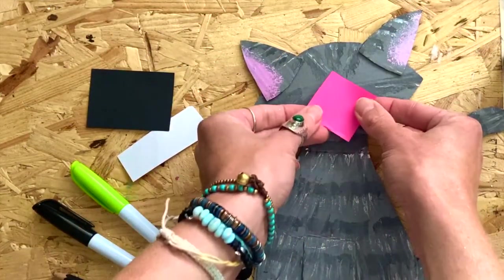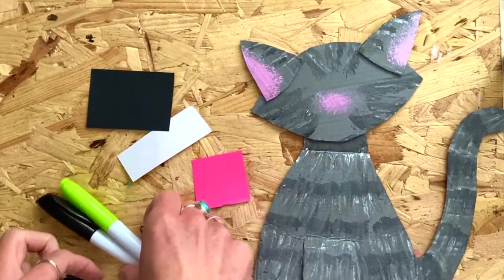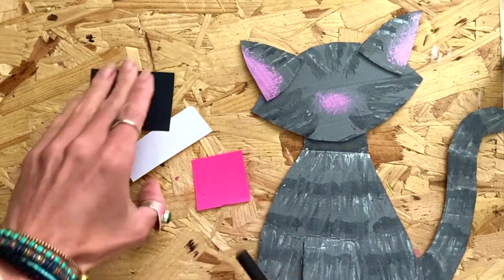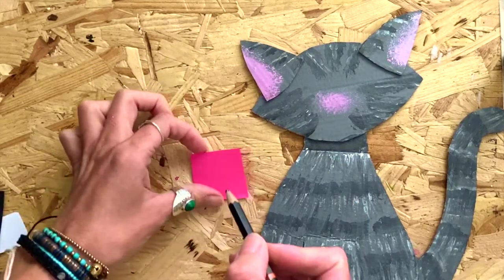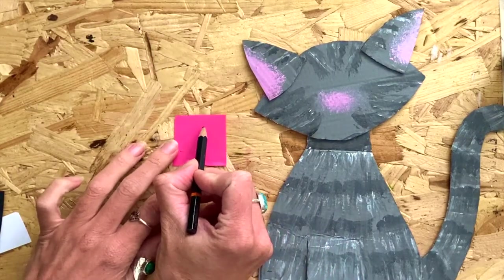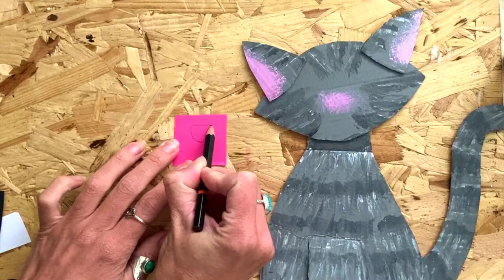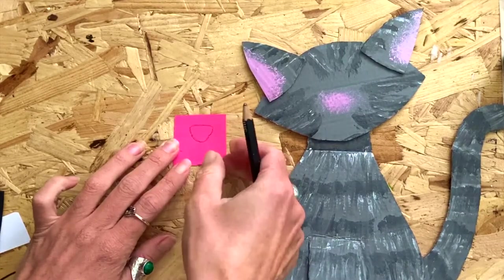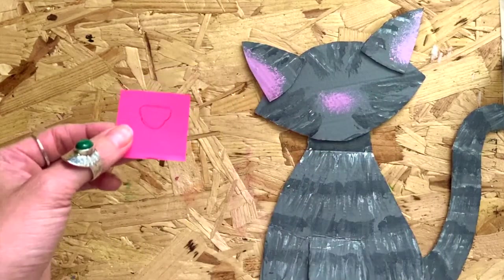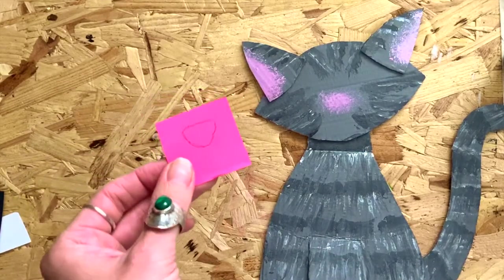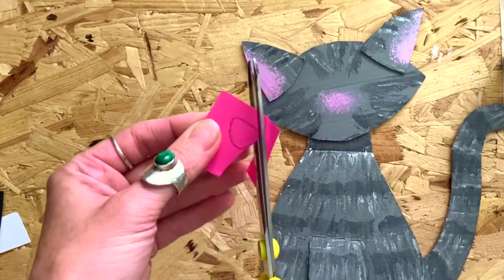Taking some pink paper or just some plain paper that you've colored in with a pink crayon or coloring pencil, we're going to create a nose shape. The best way to do this is to draw a little triangle and make sure that the triangle's corners are rounded instead of sharp. With some scissors, cut it out.